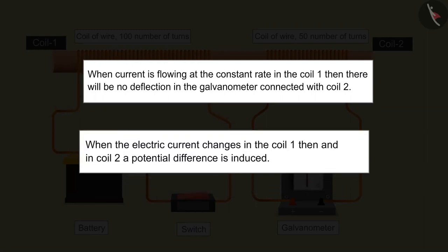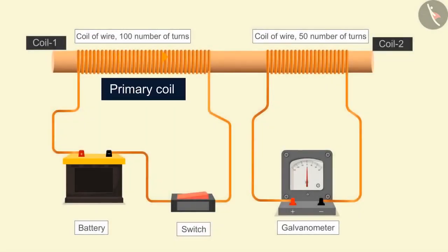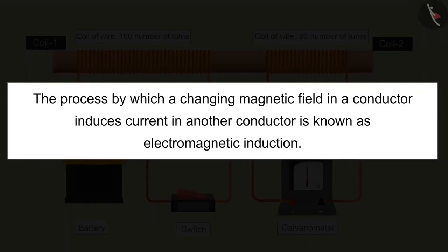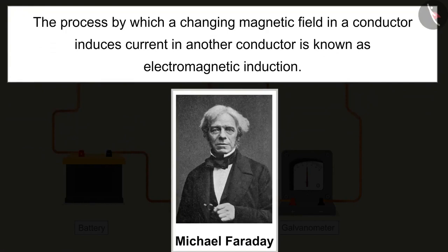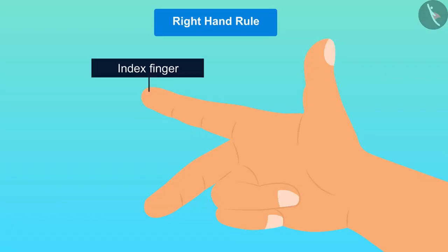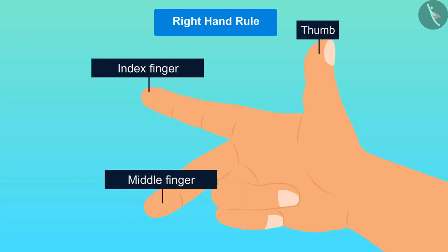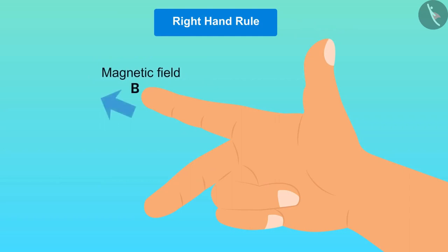When the electric current changes in coil one, a potential difference is induced in coil two. Coil one is known as the primary coil and coil two as the secondary coil. There is a change in the magnetic field around coil one when the current changes; due to this, the magnetic field of the secondary coil also changes, which induces an electric current. The process by which a changing magnetic field in a conductor induces current in another conductor is known as electromagnetic induction. Michael Faraday experienced this for the first time in history. To find the direction of this induced current, Fleming's right-hand rule is used: stretch the index finger, middle finger, and thumb of the right hand so all three are mutually perpendicular — the index finger represents the direction of magnetic field lines, the thumb represents the direction of motion, and the middle finger gives the direction of the induced current.